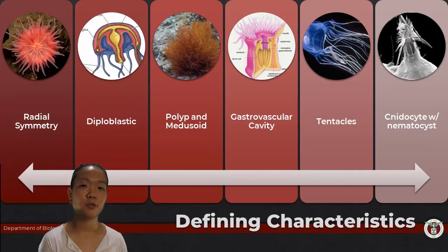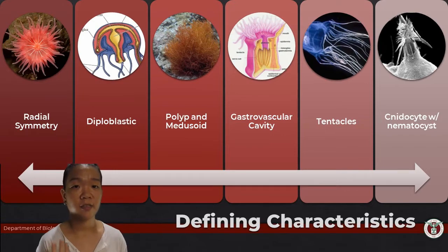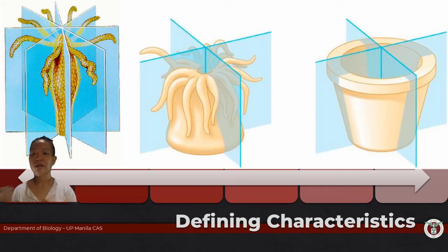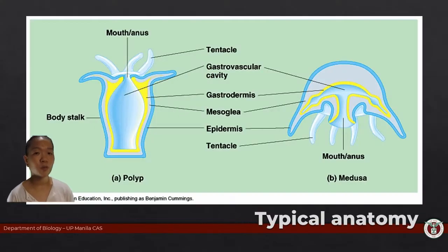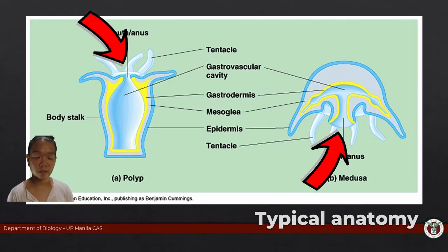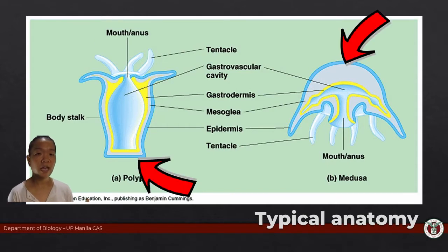Cnidarians do have certain characteristics that unify them as a group. Cnidarians exhibit some type of radial symmetry. That really means there's no front, there's no back. They don't have a distinguished head, but they do have an aboral and an oral end. The oral end is where you find the opening of the mouth, and the aboral end is the opposite side.